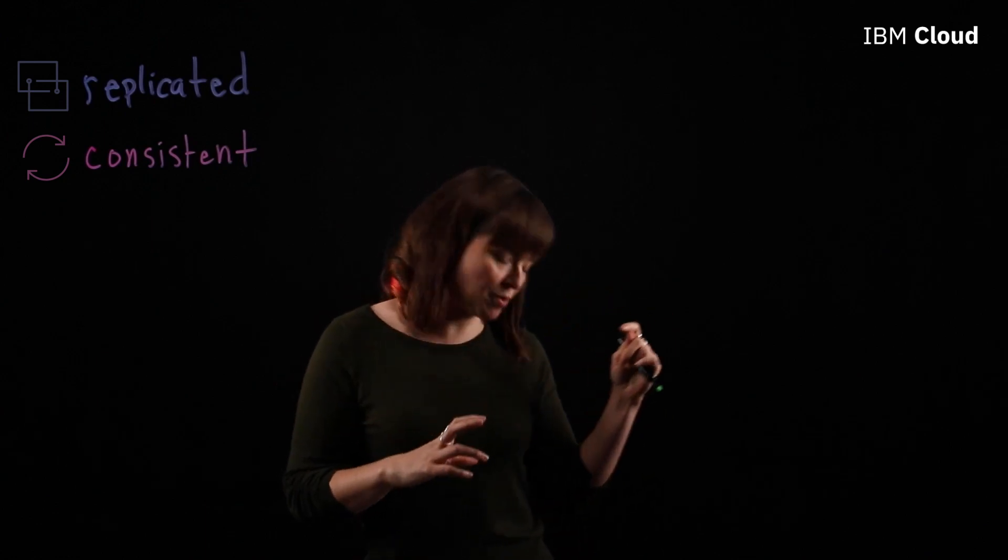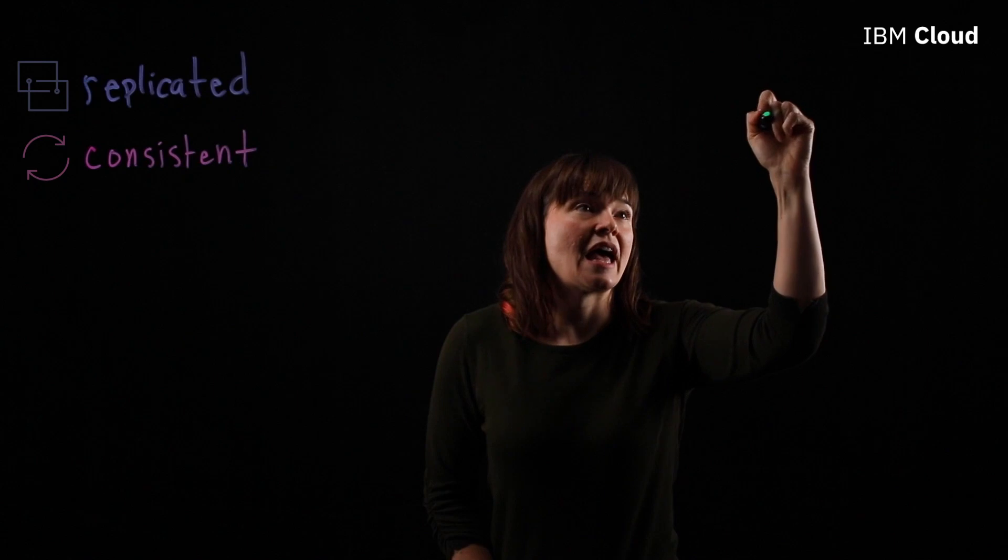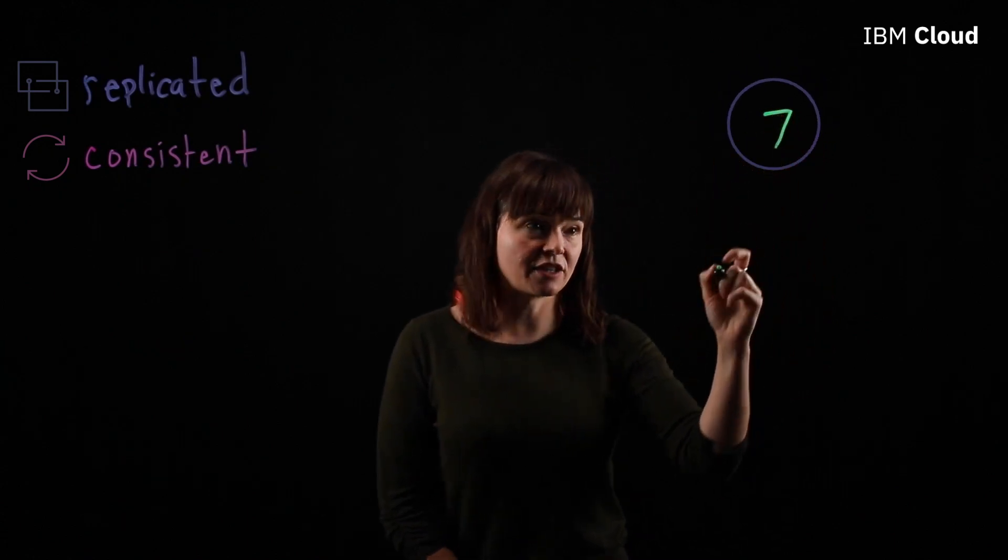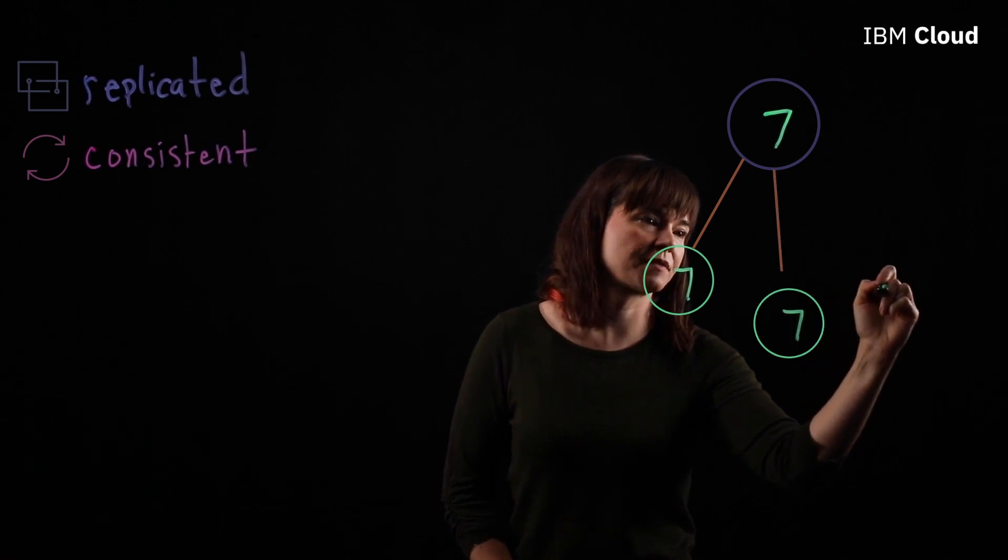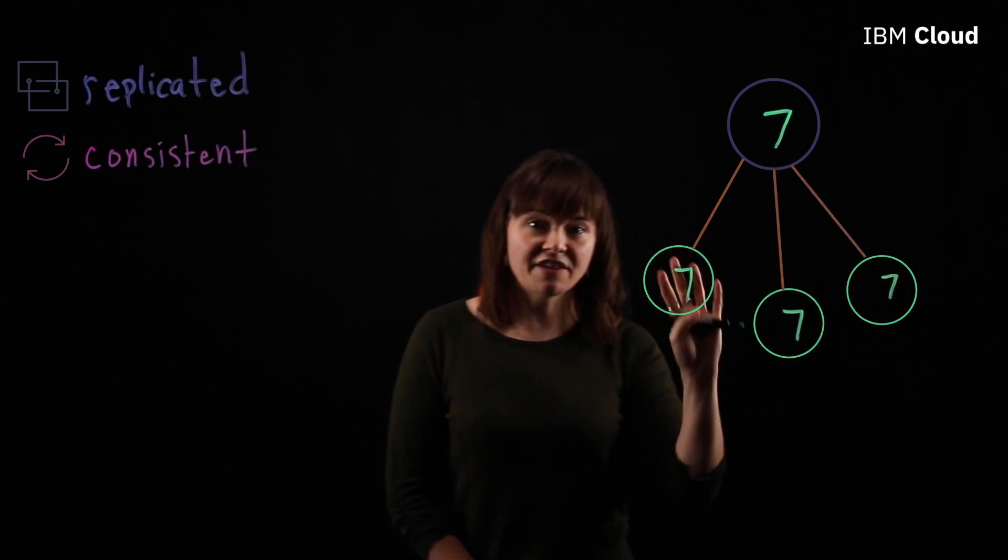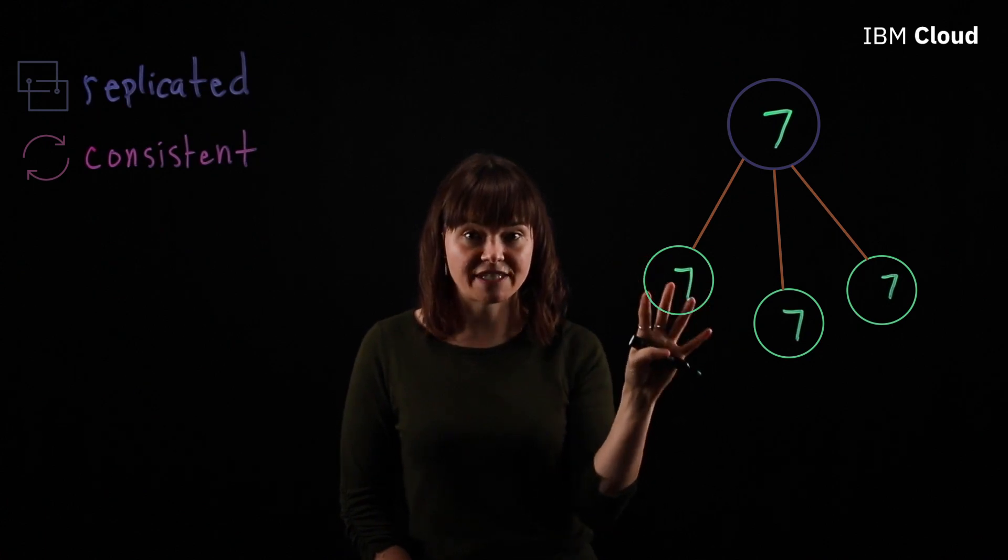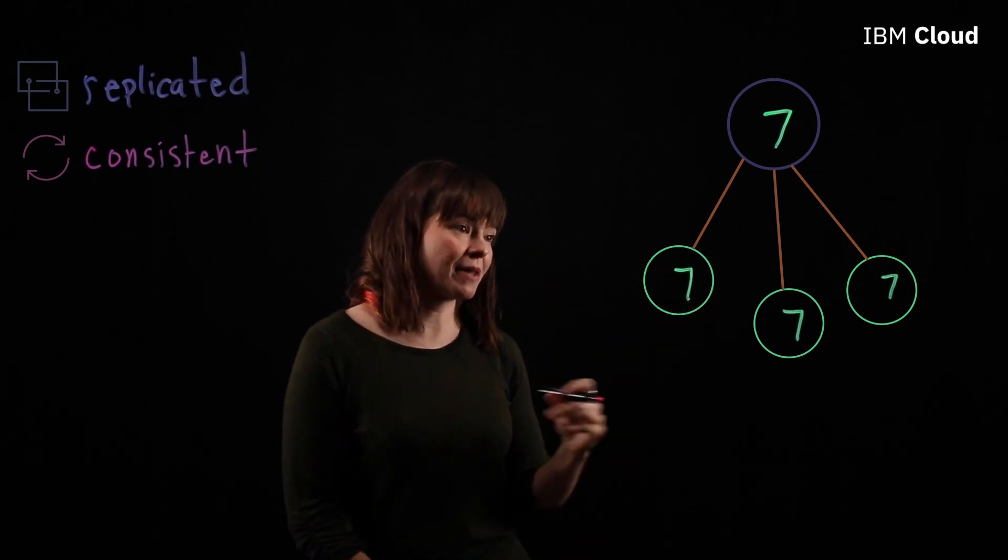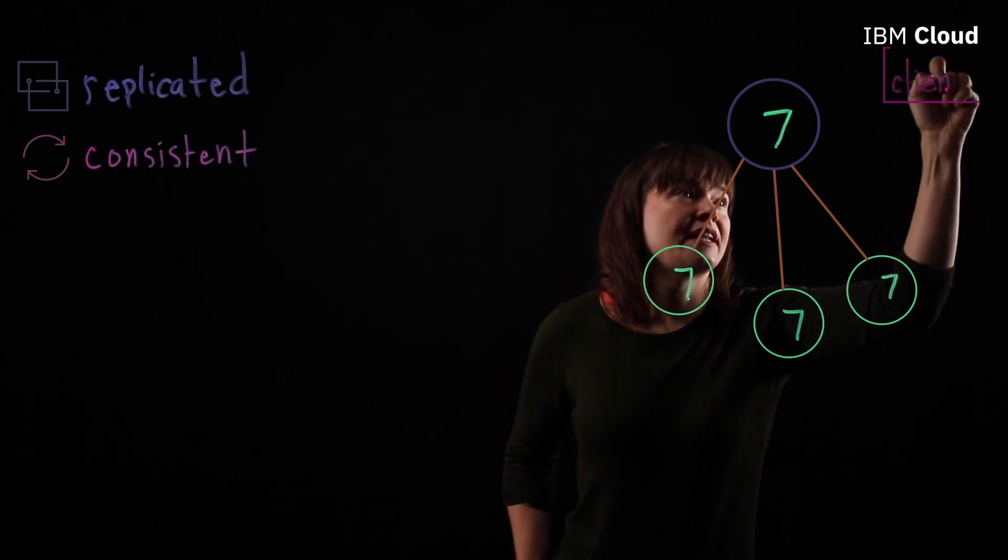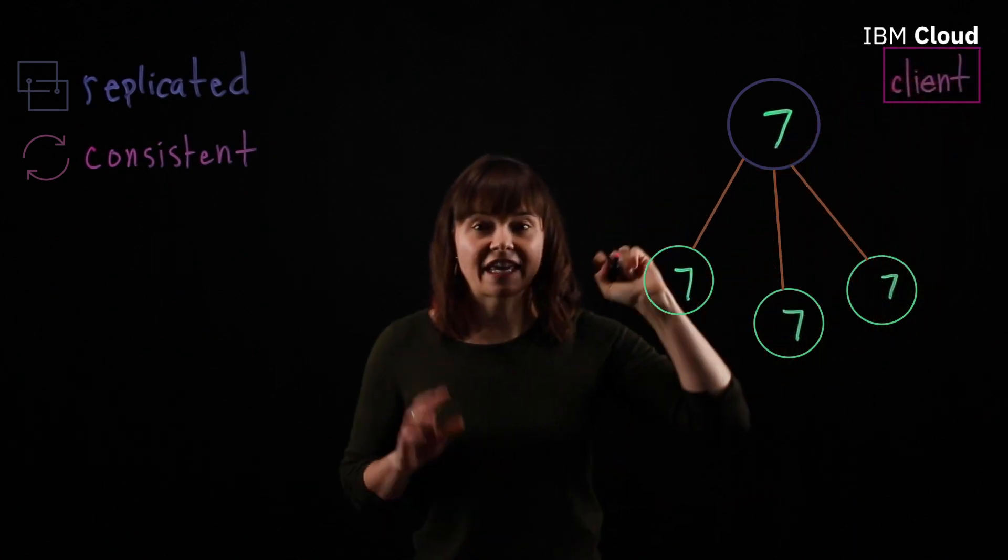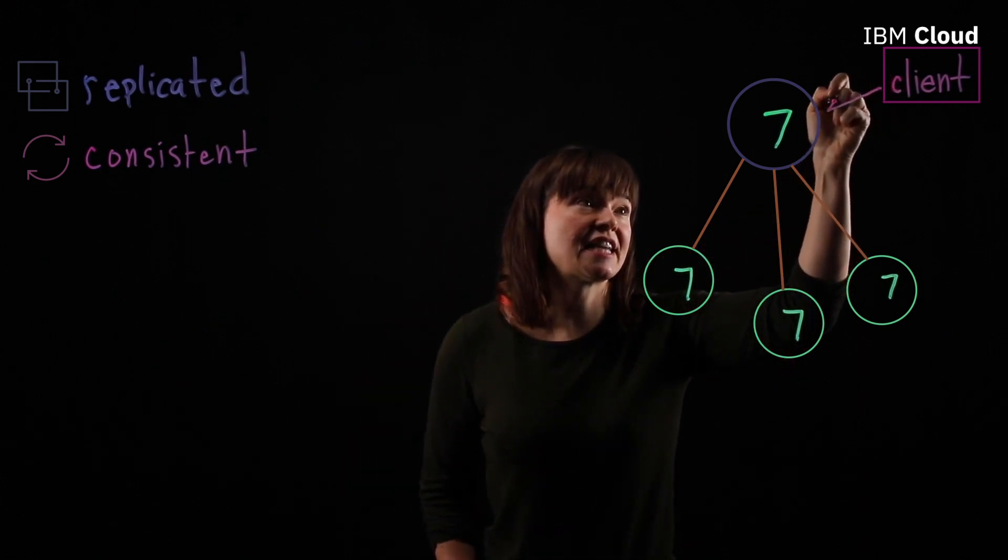So let's make a very simple etcd cluster of only four nodes. An etcd cluster always has a leader and then the other nodes in the cluster are followers. It's a key value data store, so in this case at key one we have the value of seven. Let's say a web application comes in and lets the leader node know at key one we want to store the value of 17 instead of seven.